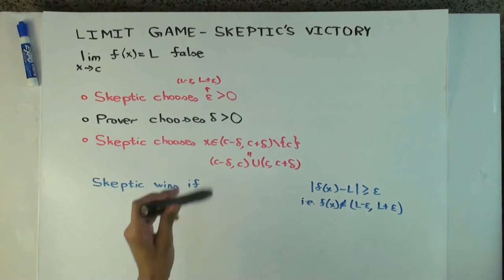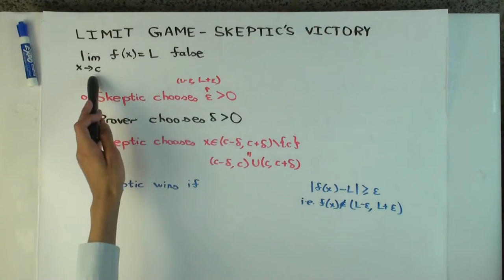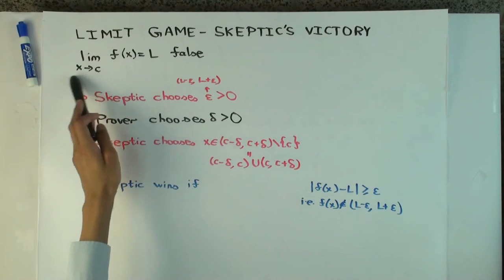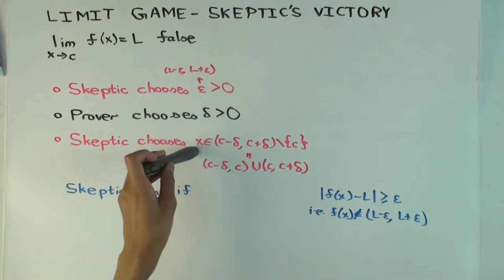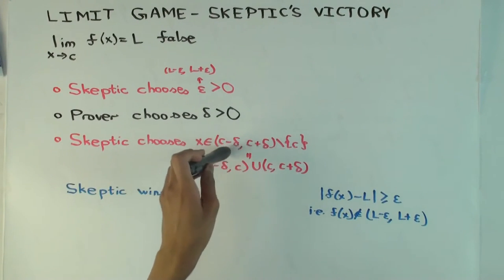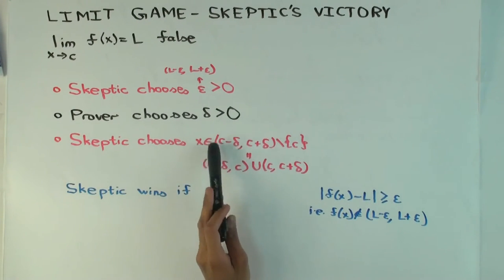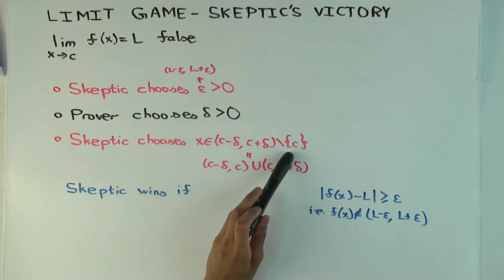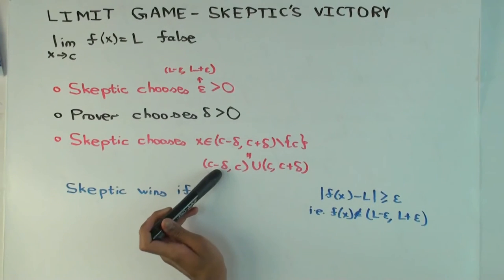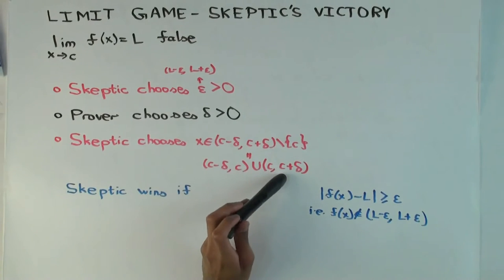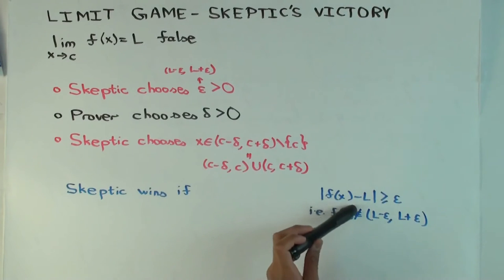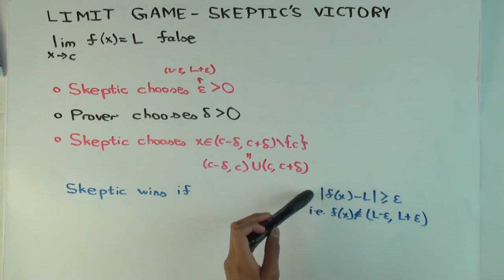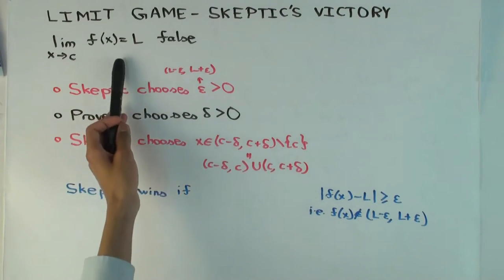Okay. The prover chooses a delta greater than zero. So the prover is now basically trying to pick a neighborhood of c, the domain point or the point near the domain points. And then the skeptic will then pick a value x which is within the interval delta distance of c except the point c itself. That's either delta interval on the left or delta interval on the right of c. And then the judge comes along and computes this value, absolute value f(x) minus L. And if it's less than epsilon then the prover would have won.